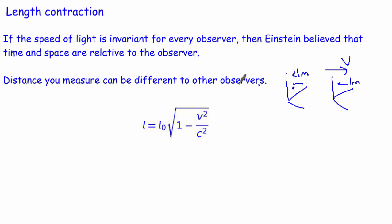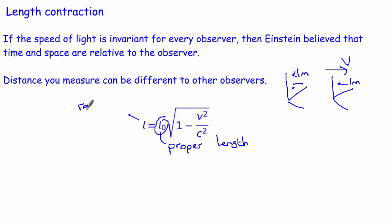The reason is because of the equation. The proper length L₀ is the length of the object in its own rest frame — what it measures when you are at rest compared to it. V is the velocity, C is the speed of light, and L is the relativistic length — the length you measure if you're in a different frame to the rest frame of the object. Provided you know those values, you can work out the relativistic length.